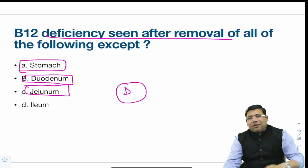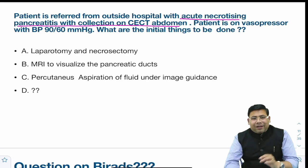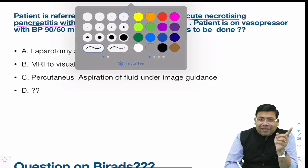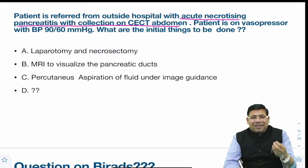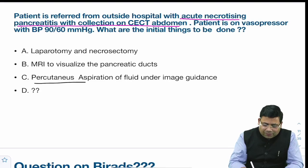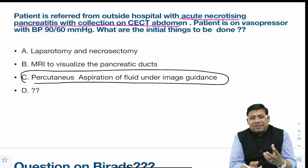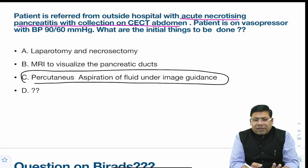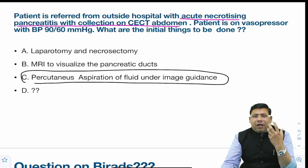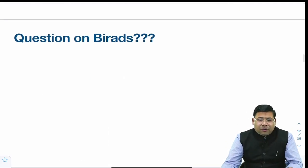A patient referred with acute necrotizing pancreatitis with collection on CT scan and on vasopressor — meaning the patient is very sick. In this scenario, forget about surgery. The first thing is percutaneous aspiration under USG to remove the contaminated content. This would be the best answer. Necrosectomy would only be done once the patient is hemodynamically stable. CT has already given the dimensions of the necrosis, so MRI at this point is pointless.